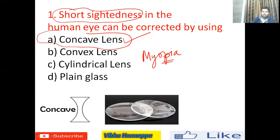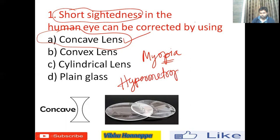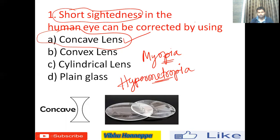The right answer for the first question is concave lens. Another common eye defect is hypermetropia, where a person can clearly see far-away objects — like text on a blackboard — but cannot see things close by, such as on a book or screen. This kind of eye defect can be corrected by using a convex lens.